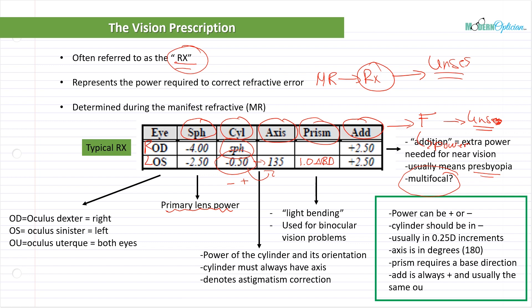Power in most parts of the prescription can either be plus or minus, and that denotes different things. The only places you don't need a plus or minus are the axis — because that's in degrees, not diopters — and prism, which is never a minus. ADD is always plus.